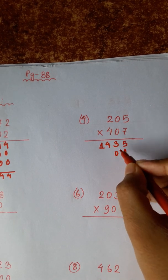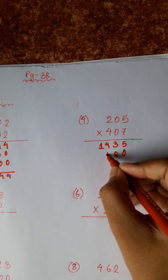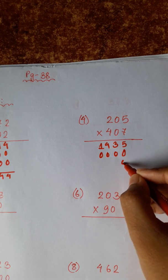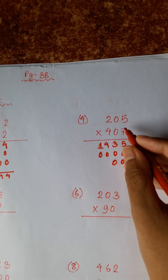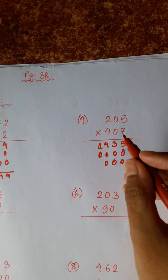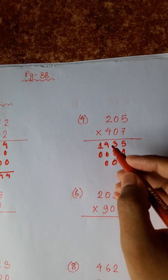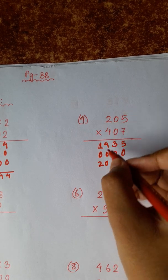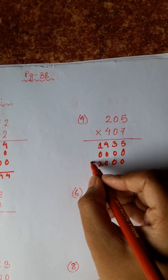5, 0, 0, 0, 0, 0, 2, 0, 0. 5, 4, 0, 20, carry 2. 4, 0, 0, plus 2 is 2. 4, 2, 0, 8.